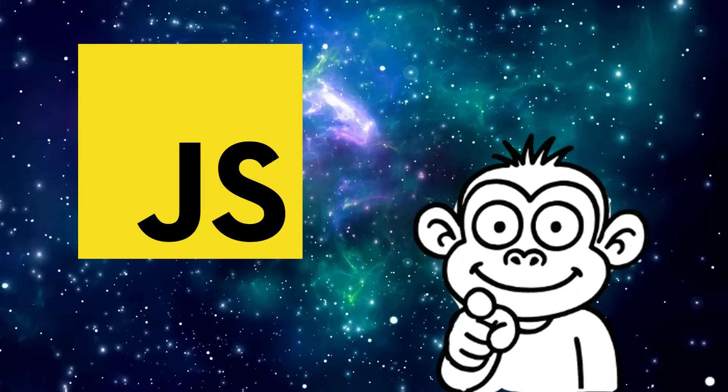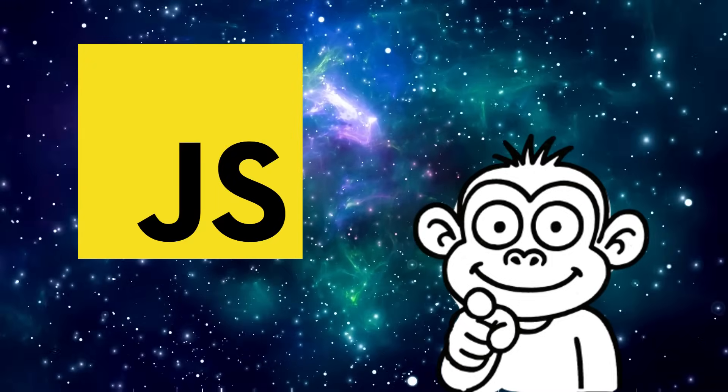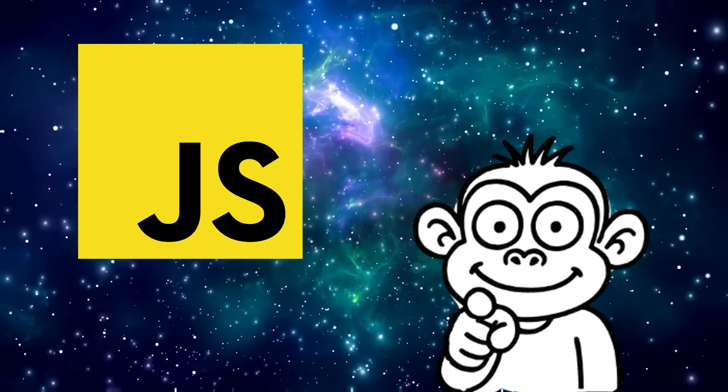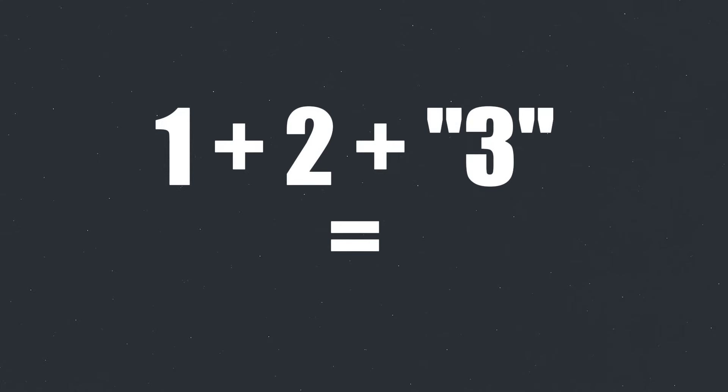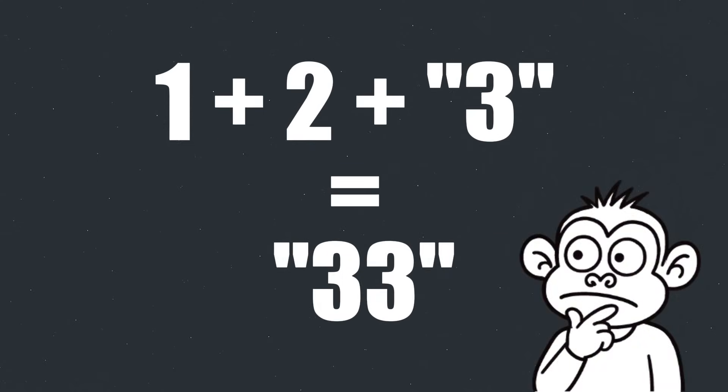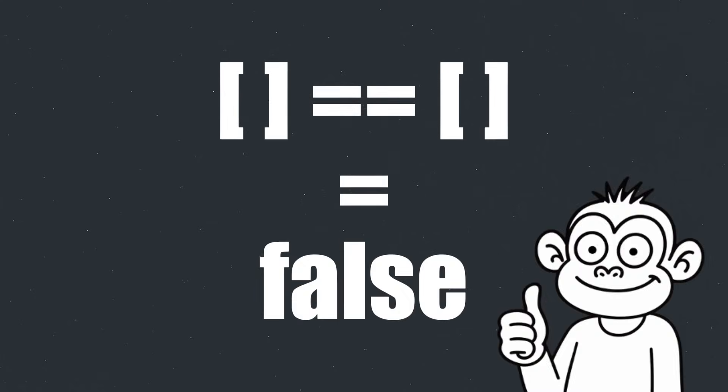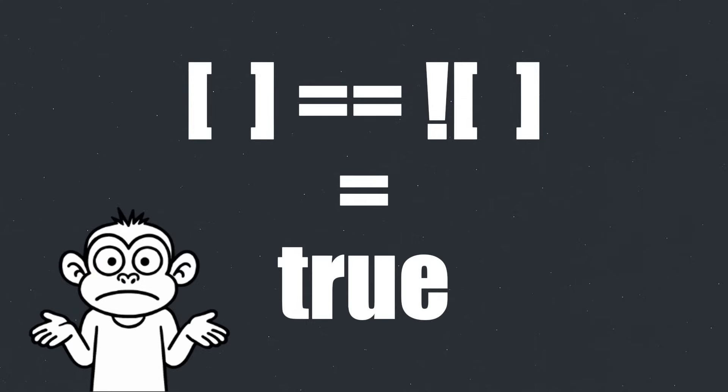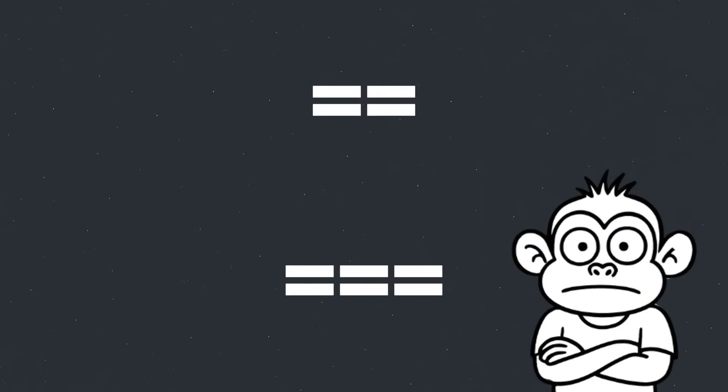You think you know JavaScript? It's quite logical to add one and two and a string three to get 33, right? Or if you use the loose equality operator on two empty arrays the result is false, but if you compare an empty array with a not-empty array the result is true. And why even have a loose and strict equality operator?